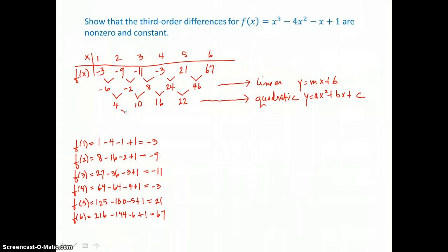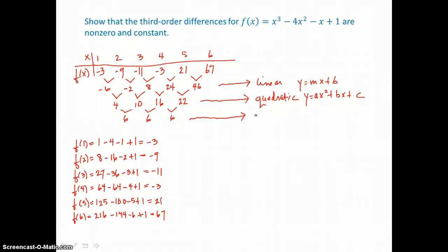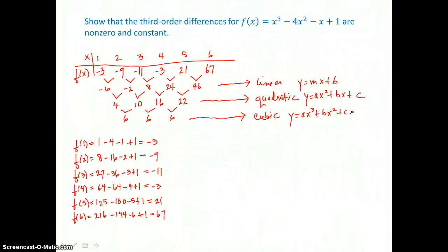And for third-order differences — these should be non-zero and constant. 22 take away 16 is 6; 16 take away 10 is 6; and 10 take away 4 is also 6. So we've shown that the third-order differences are non-zero and constant — a constant of 6 for this cubic function. The cubic model is of the form y equals ax cubed plus bx squared plus cx plus d.